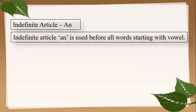Both 'a' and 'an' are indefinite articles and they do not specify any particular thing. But there is a difference: 'a' is used before a consonant letter, while 'an' is used before all words starting with a vowel. Remember — vowel sound is also important to take into consideration, not only vowel letter but also vowel sound.